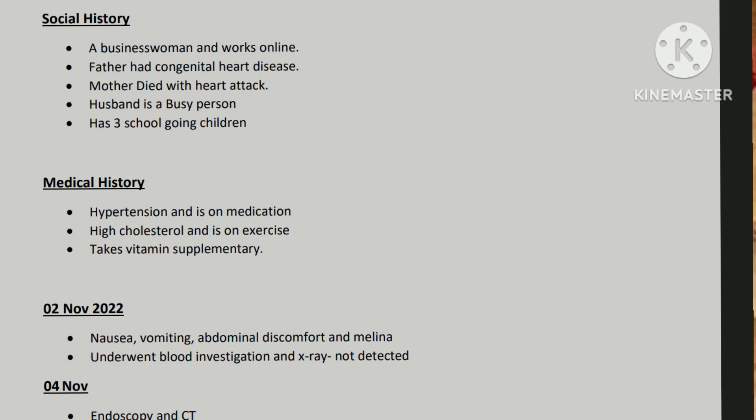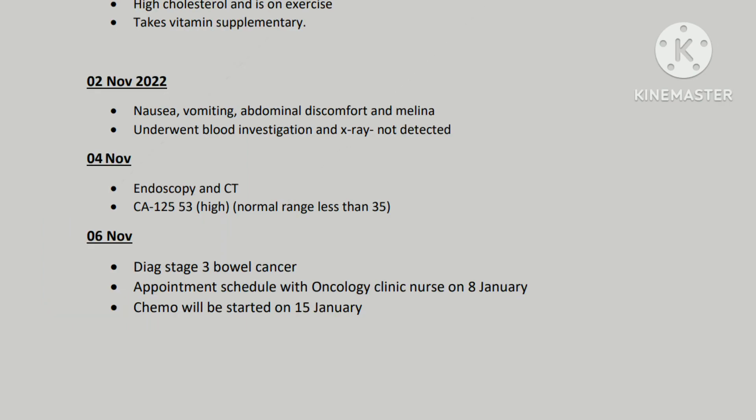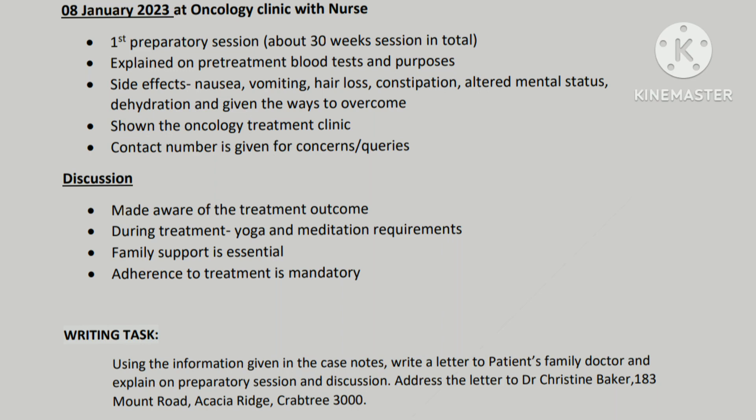Her medical history includes hypertension and she is on medication, high cholesterol, and she is on exercise and takes vitamin supplements. On 2nd November 2022, the first admission — she presented with nausea, vomiting, abdominal discomfort, and malena. Blood investigation and X-ray were done but nothing was detected. On 4th November they did an endoscopy and CT scan. CA-125 tumor markers were found to be high — normal range is less than 35. On 6th November, stage 3 bowel cancer was diagnosed.